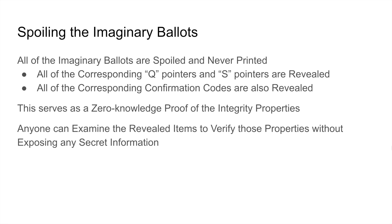Then all of the imaginary ballots are spoiled and never printed. All of the corresponding Q-pointers and S-pointers are revealed. All of the corresponding confirmation codes are also revealed. This serves as a zero-knowledge proof of the integrity properties listed earlier.